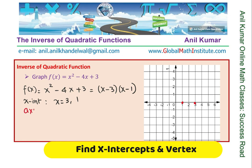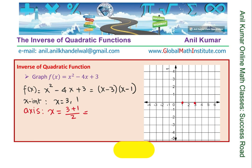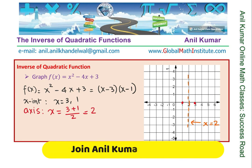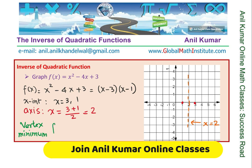Now let's find the axis of symmetry. The axis will be at x equals (3 plus 1) divided by 2 — add them and find the average, which is at x equals 2, midway between the two x-intercepts. Now, to find the vertex: the vertex is a point on this axis and must be a minimum since the parabola opens up. Substituting x equals 2 into the factored form gives (2 minus 3)(2 minus 1), which is (minus 1)(plus 1), equals minus 1. So we get the vertex at (2, minus 1).